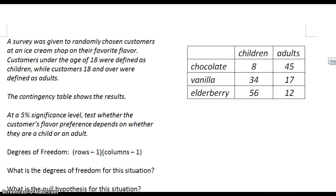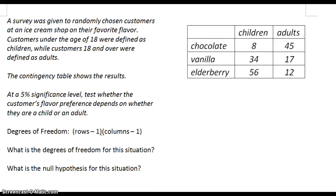I have a quick example here. A survey was given to randomly chosen customers in an ice cream shop on their favorite flavor. Customers under the age of 18 were defined as children, while customers 18 and over were defined as adults. Here are the results. At a 5% significance level, test whether the customer's flavor preference depends on whether they are a child or an adult.